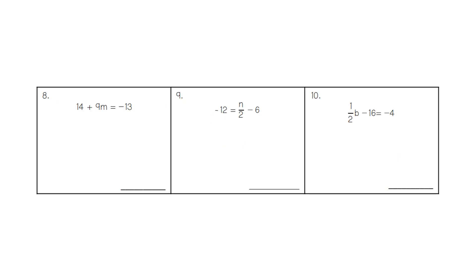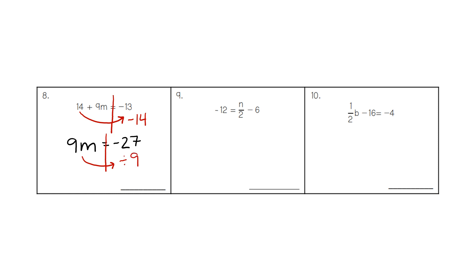Moving on to two-step equations. We draw our line down the equal sign — the 14 and the 9 are on the left-hand side and the negative 13 is on the right-hand side. For two-step equations, we start with the number without the variable; we save the variable number for last. So we move the 14 away and do the opposite: minus 14. Our equation now reads 9m, and negative 13 minus 14 equals negative 27. Then instead of multiplying 9 and m, we divide. Negative 27 divided by 9 gets a value of negative 3.